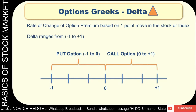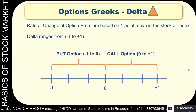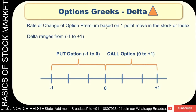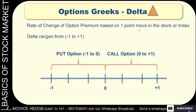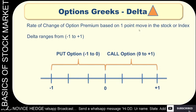Delta is the rate of change of option premium based on one point move in stocks or an index. That is what we call Option Delta. Let me show it on a chart. The Bank Nifty chart shows the price moved about 400 to 445 points — approximately 1.28%. The rate of change of option premium based on that one-point move in the index is what the option Greek Delta defines.